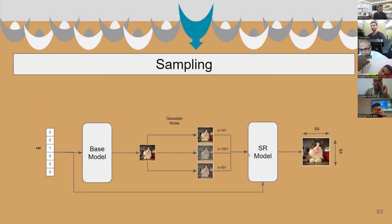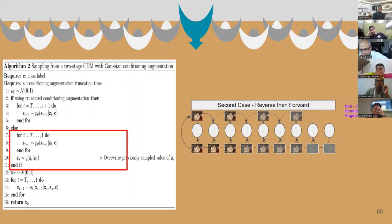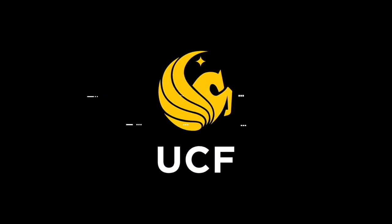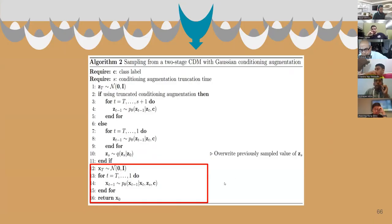Now we are done with the training. We need to check out how the sampling stage will work, because here we won't have access to the ground truth data. If we use the truncated augmentation, we can just stop the reverse process at the respective time step of the base model to get the noisy sample. Or, if we use the non-truncated augmentation, we have to complete the whole reverse process, and then we can use the forward process equation to generate the noisy samples. Finally, we use this noisy sample to get the 64x64 output using the super-resolution model.